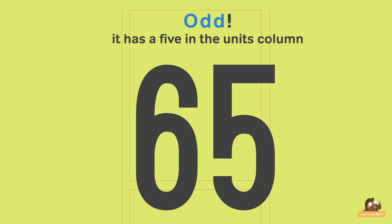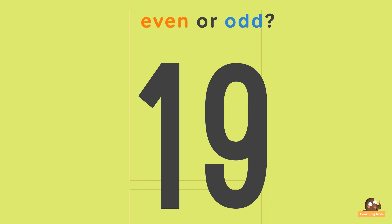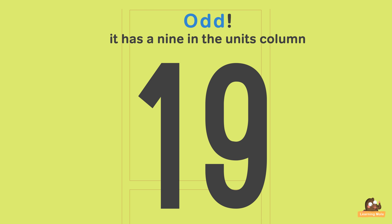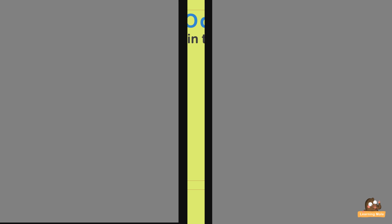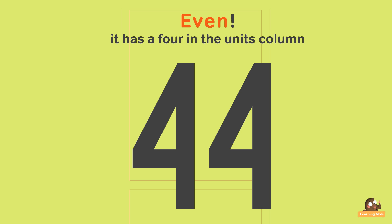65 has a 5 in its units column — so it is odd. 19 — even or odd? It has a 9 in the units column — odd.